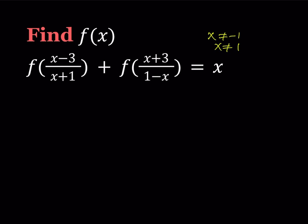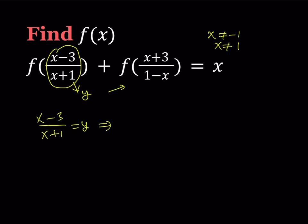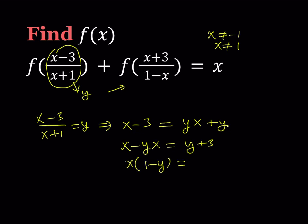I'm going to use substitution — that's one of my favorite methods. For that purpose, I'm going to replace the expression (x minus 3) over (x plus 1) with y. So I have (x minus 3) over (x plus 1) equals y. Cross-multiplying gives x minus 3 equals yx plus y. Collecting x terms: x minus yx equals y plus 3, so x times (1 minus y) equals y plus 3, and finally x equals (y plus 3) over (1 minus y).